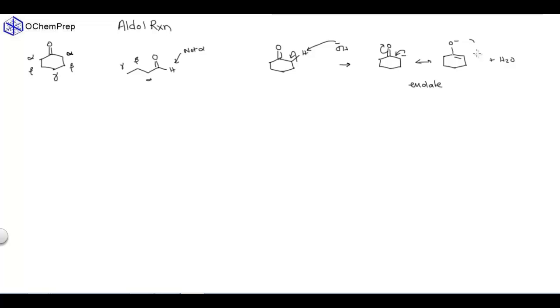And the key to understanding the aldol reaction is that you have an enolate, and because you have a carbon with a partial negative charge, that carbon is nucleophilic. So what happens with an aldol reaction is you take a carbon and make a nucleophile out of it, and you react it with another carbon, like this one, that's electrophilic.